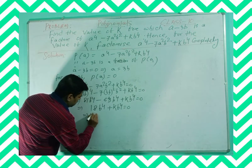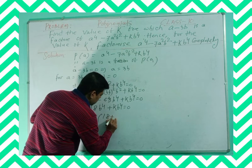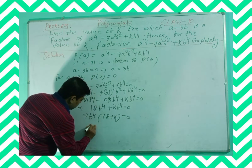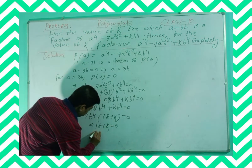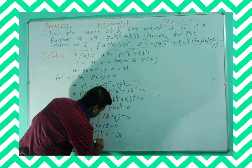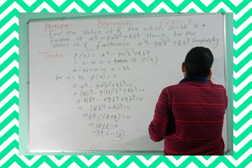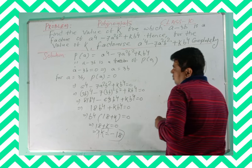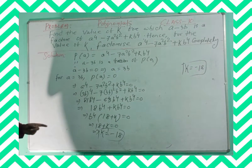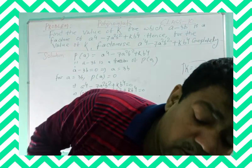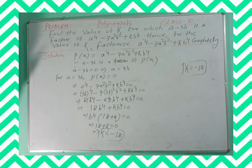Then you can bring b to the power 4 out as a common factor, giving b to the power 4 times 18 plus k equal to 0. That implies 18 plus k is equal to 0, and therefore k is equal to minus 18. Thus we got the value of k is minus 18. That is the first part — the value of k for which a minus 3b is a factor of the polynomial. Now for the second part, you have to factorize the given polynomial.